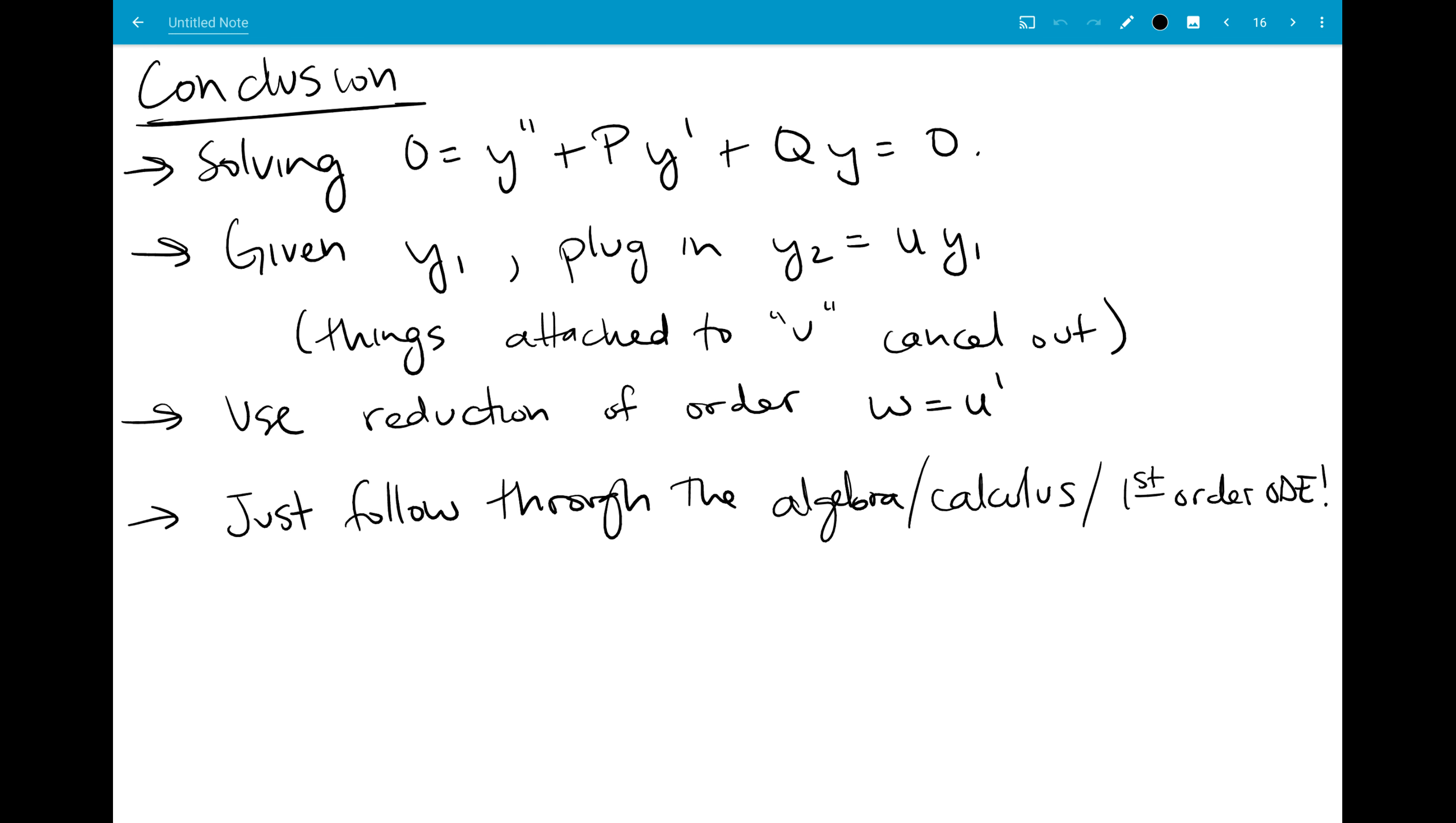So I wrote down these things right here that I thought were like the big takeaways. We were solving, I wrote equal to zero twice. We were solving the second order differential equation, and your approach is always going to be that you're given y1, and you plug in y2 equals u times y1. You have to use the product rule to do it. It creates a bunch of algebra and calculus, but the things attached to u will always cancel out. So you always use reduction of order w equal to u prime to solve a simpler differential equation.